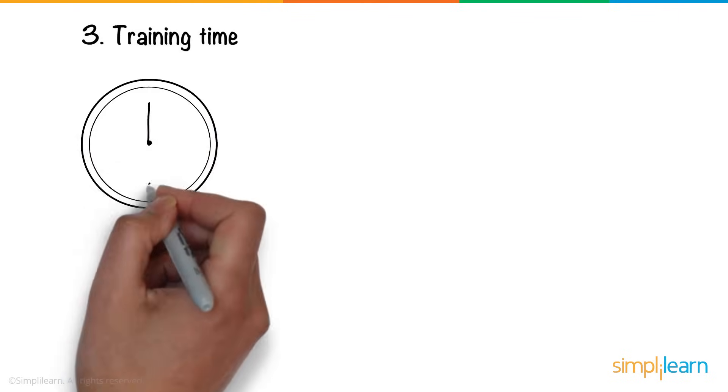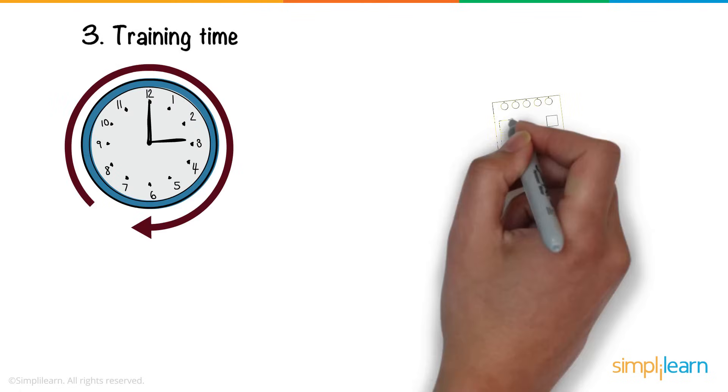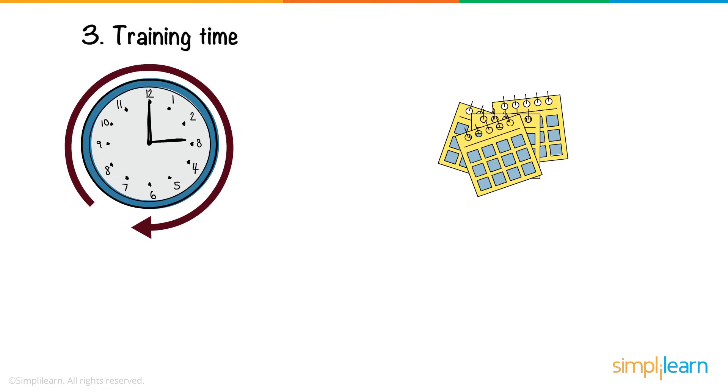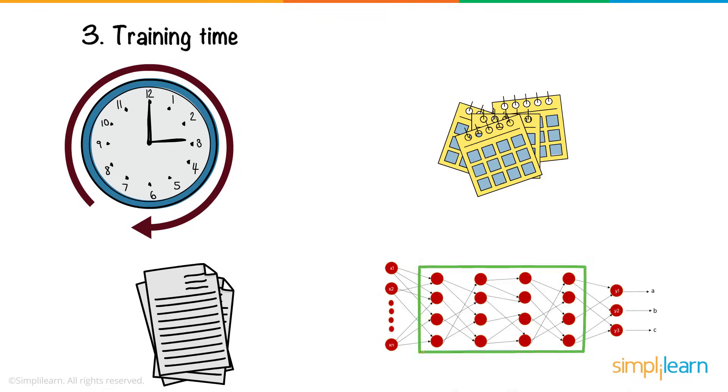And finally, we come down to training time. Deep neural networks take hours or even months to train. The time increases with the amount of data and number of layers in the network.